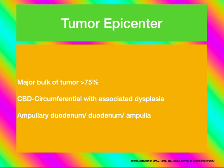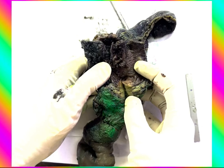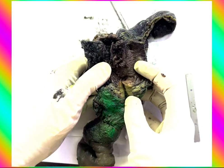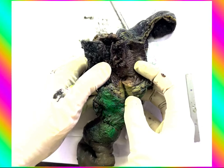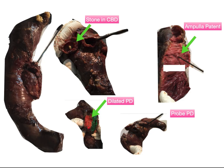This is one slice of the Whipple's specimen opened through the CBD. The brownish-colored mucosa is the CBD mucosa, and the green-colored tissue is the pancreatic tissue. You can also identify a stone in the CBD. To bivalve the specimen, put a probe into the CBD, open the specimen along the CBD, and identify where the tumor epicenter lies — whether in the CBD, pancreatic head, or ampulla. In this case, a stone is also visible in the CBD.